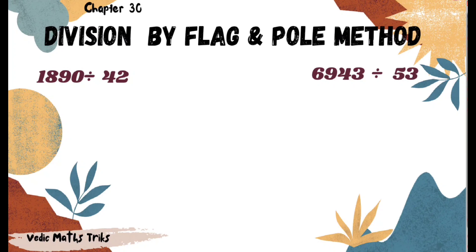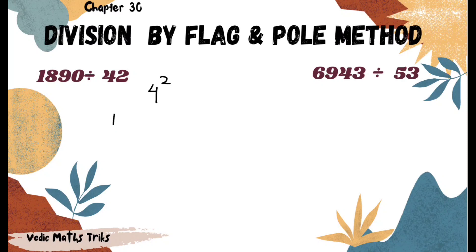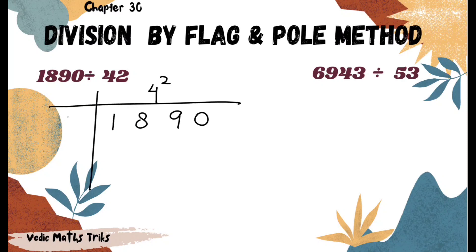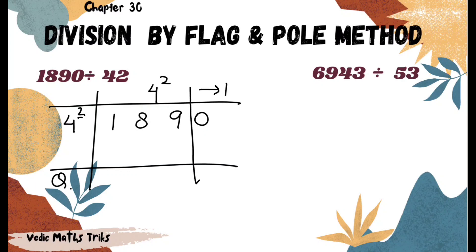Let's understand the first question of this method: 1890 divided by 42. Here we do not divide the number by 42 — we divide by 4 and take 2 as the flag. We write 1890 with divisor 4 and flag 2. Since there is one digit in the flag, we leave one digit from the right and put a partition; this part will be the remainder part.